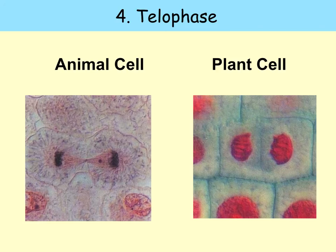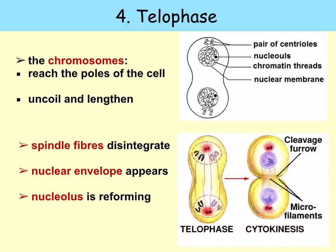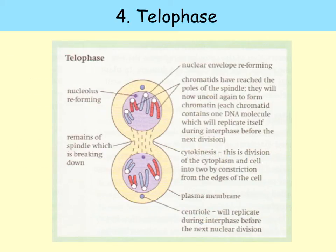The last stage is telophase — here you can see telophase in an animal and plant cell. During telophase, the chromosomes have reached the poles of the cell, they uncoil and lengthen, the spindle fibres disintegrate, the nuclear envelope reappears, and the nucleolus is reforming. The nuclear envelope is reforming, the nucleolus is reforming, and the chromatids have reached the poles of the spindle, where they uncoil to form chromatin. You might also have cytokinesis occurring — this is the division of the cytoplasm, and the cell forms two new cells.